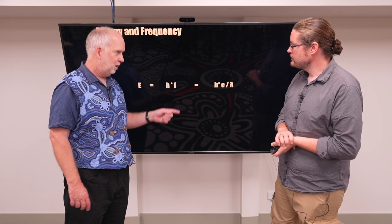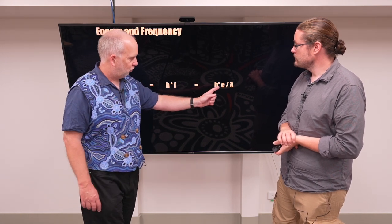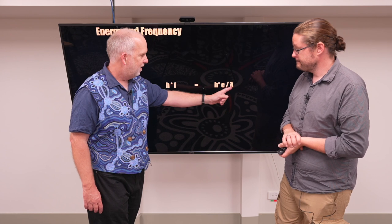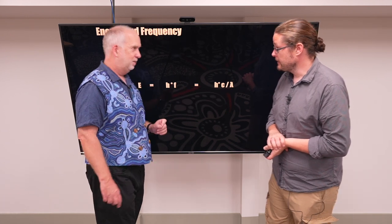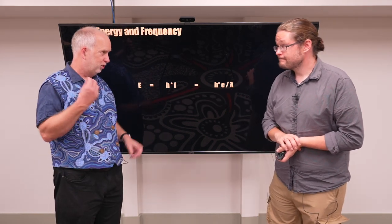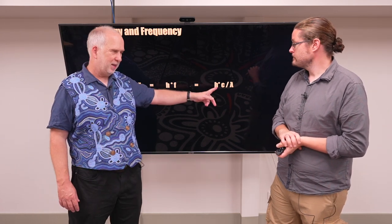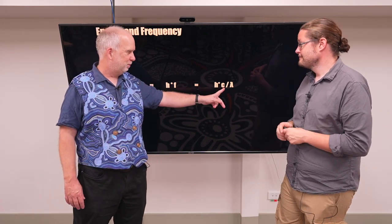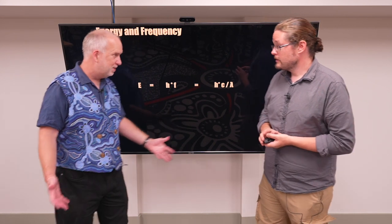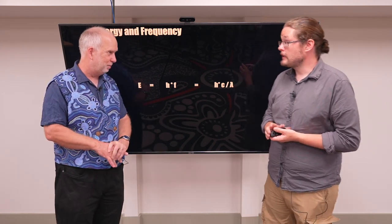So it's times the frequency, or more relevant, Planck's constant times C, which is the speed of light, divided by the wavelength. So if you want to work out how much energy one particle of light has, look up Planck's constant on Google, multiply by the speed of light, and divide by the wavelength in meters. That will give you the energy in joules.